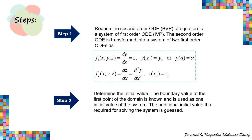Here are the steps to solve using the shooting method. Step one: reduce the second order ODE with boundary value problem to a system of first order ODEs with initial value problem. The second order ODE is transformed into a system of two first order ODEs. We let Z = dy/dx, giving us equation F1. Differentiating, dZ/dx = d²y/dx², giving us F2.